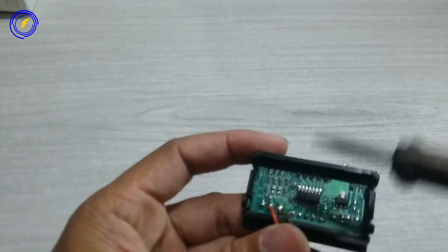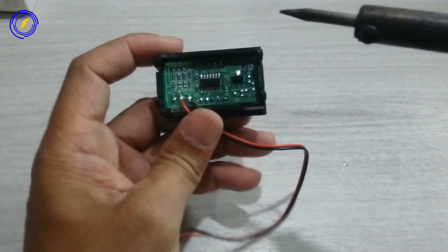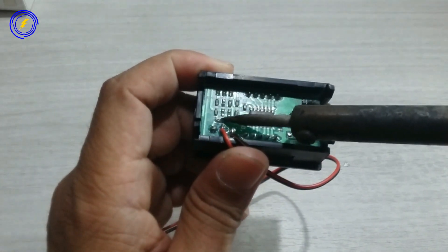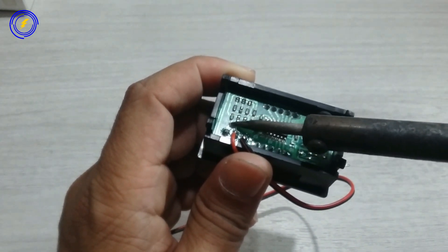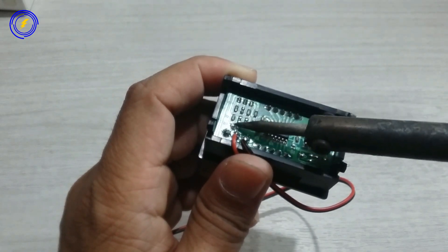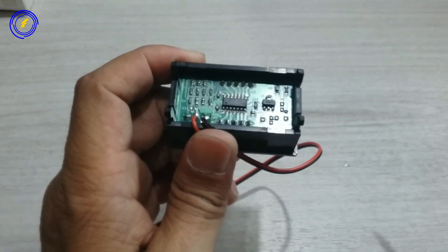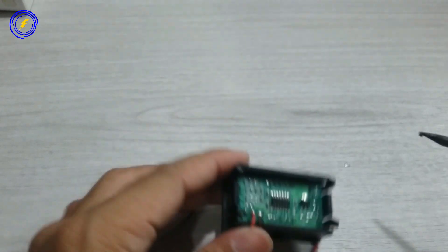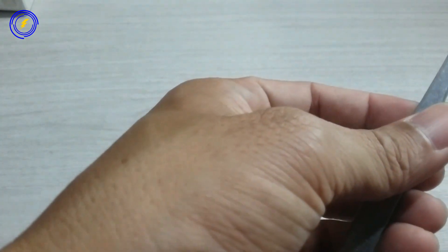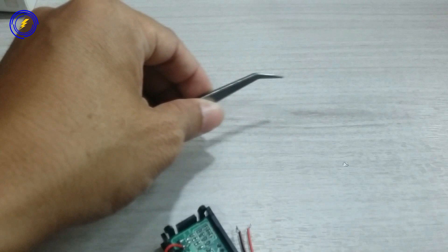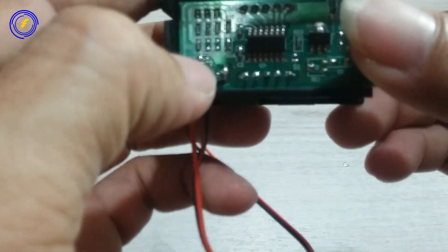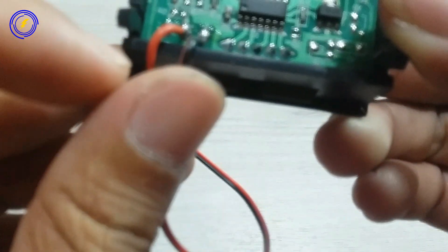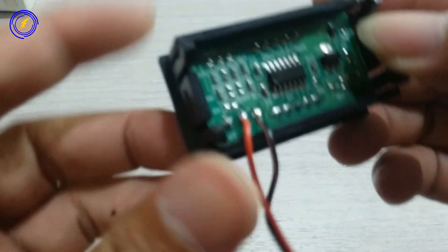Untuk resistor SMD ini, saya akan lepas dulu. Ini sudah terlepas. Nanti saya akan ganti dengan resistor 1 kilo ohm yang tadi.